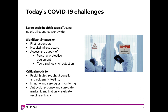One of the things we have identified as important is rapid and high-throughput genetic and epigenetic testing, both for the virus and for host response, immune and serology monitoring of antibodies and how the patient's immune system is responding to the infection. And finally, measuring the antibody response to infection or from vaccines to serve as surrogate markers for evaluating how we can move people back into the workplace safely.